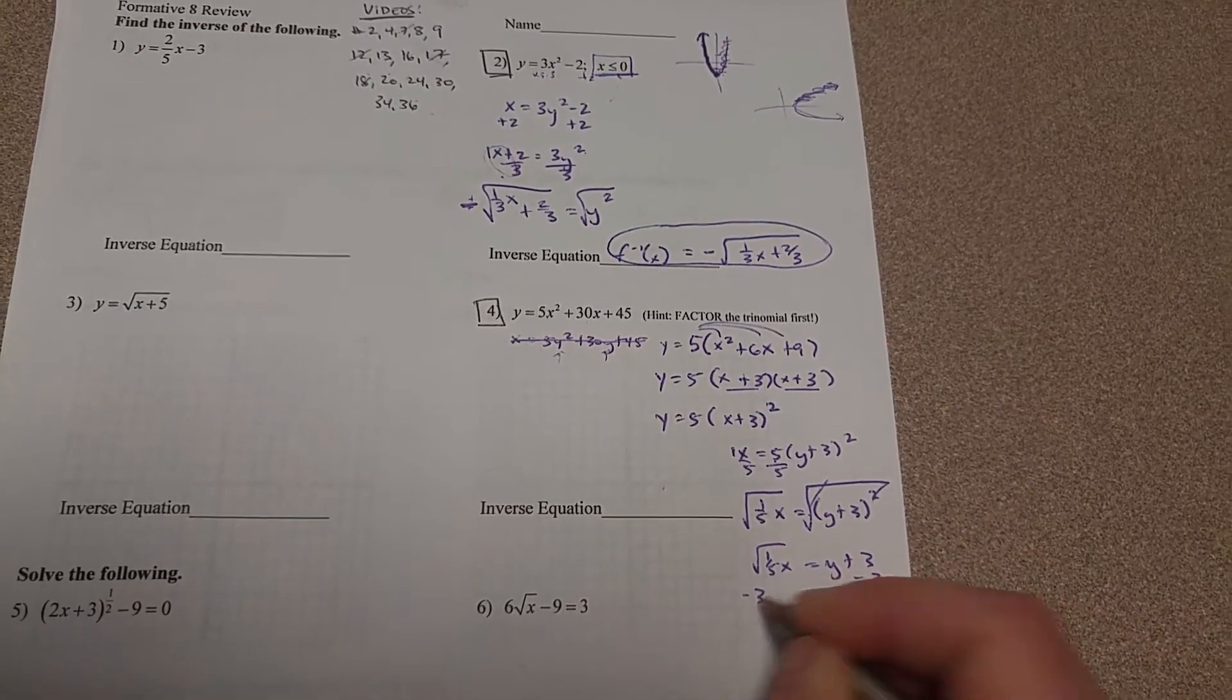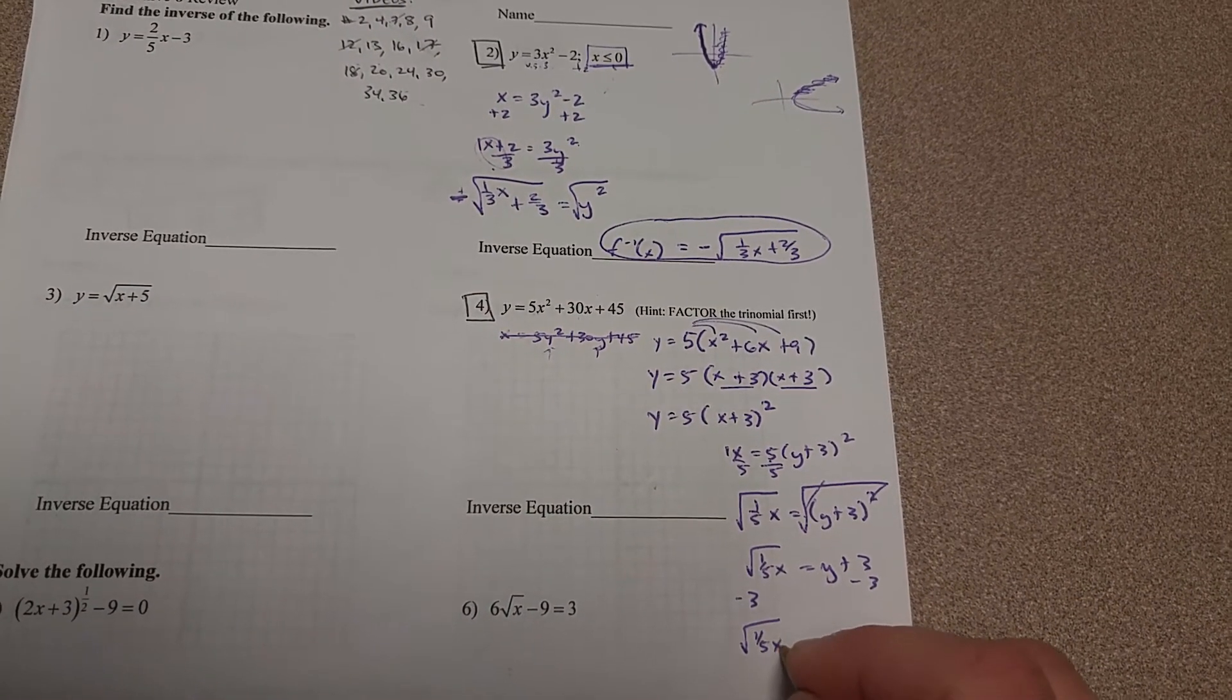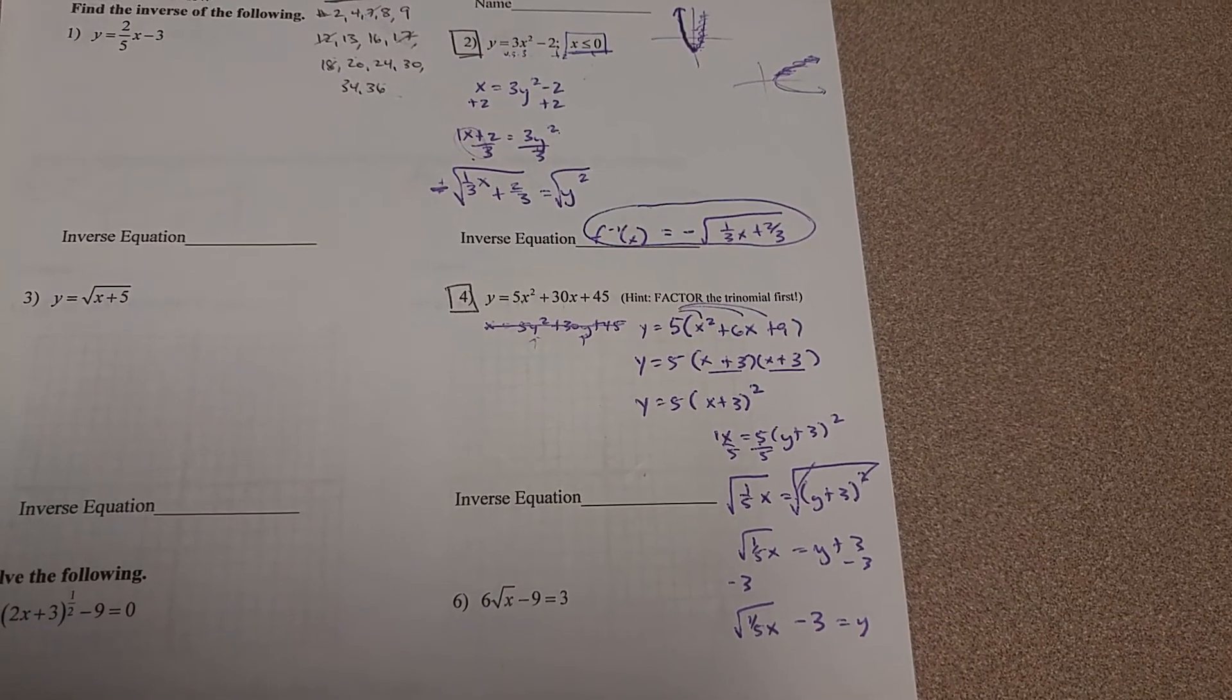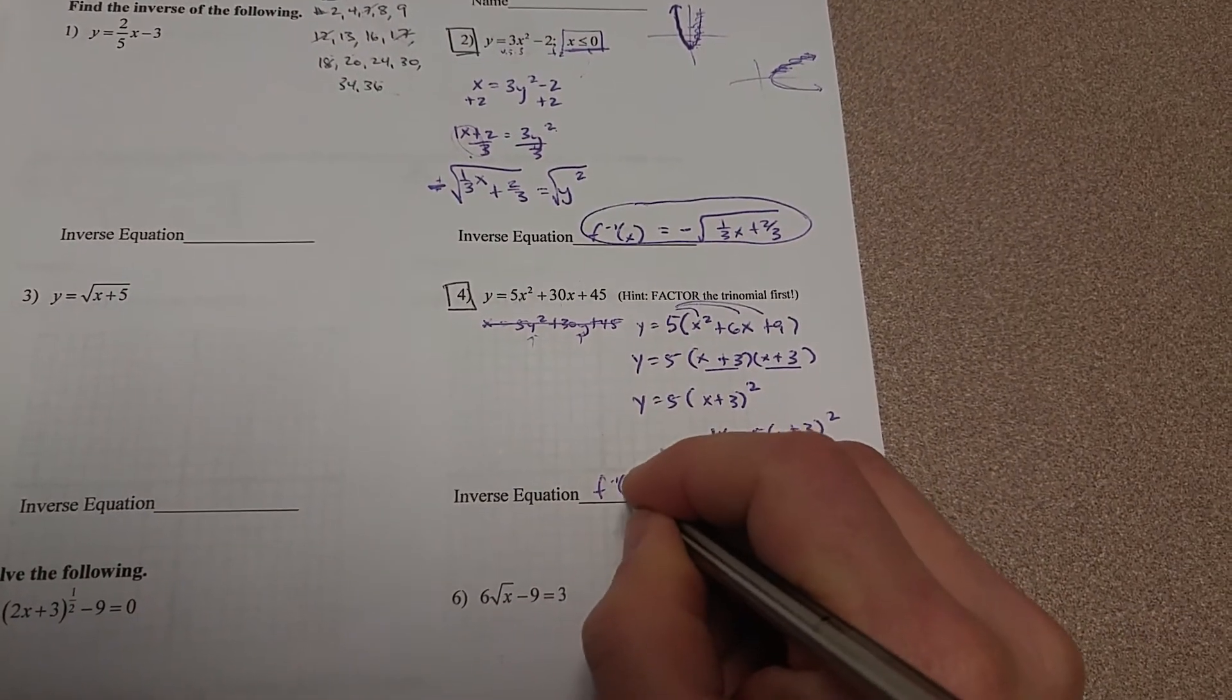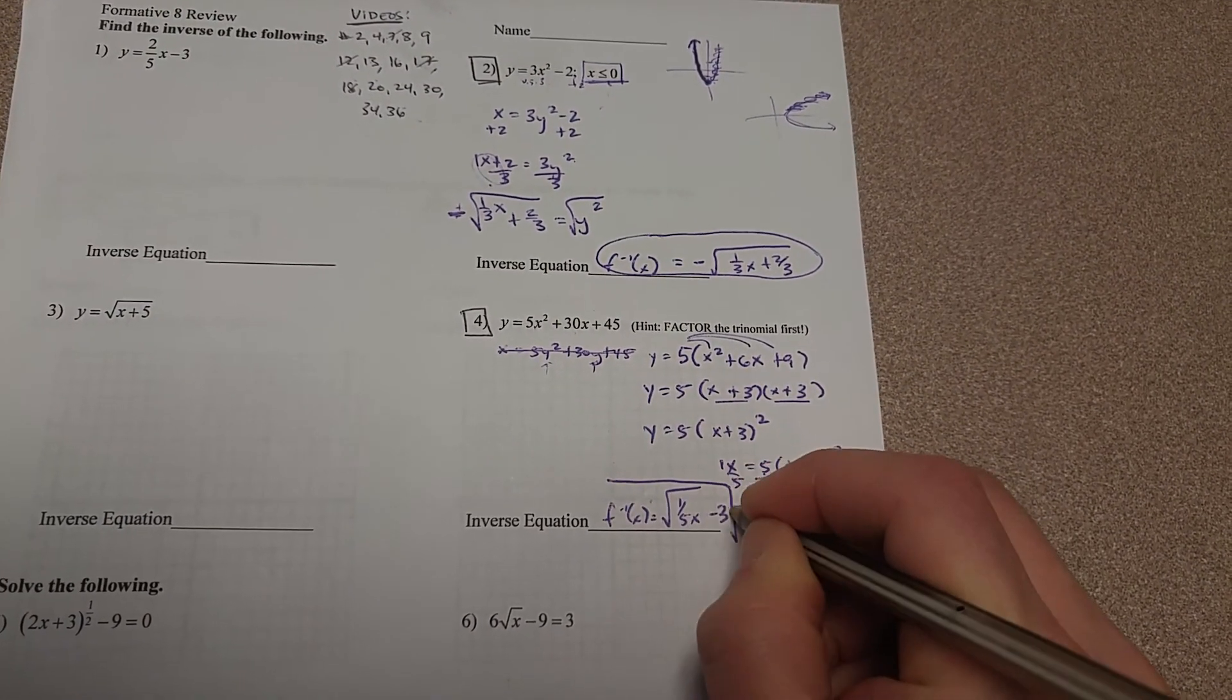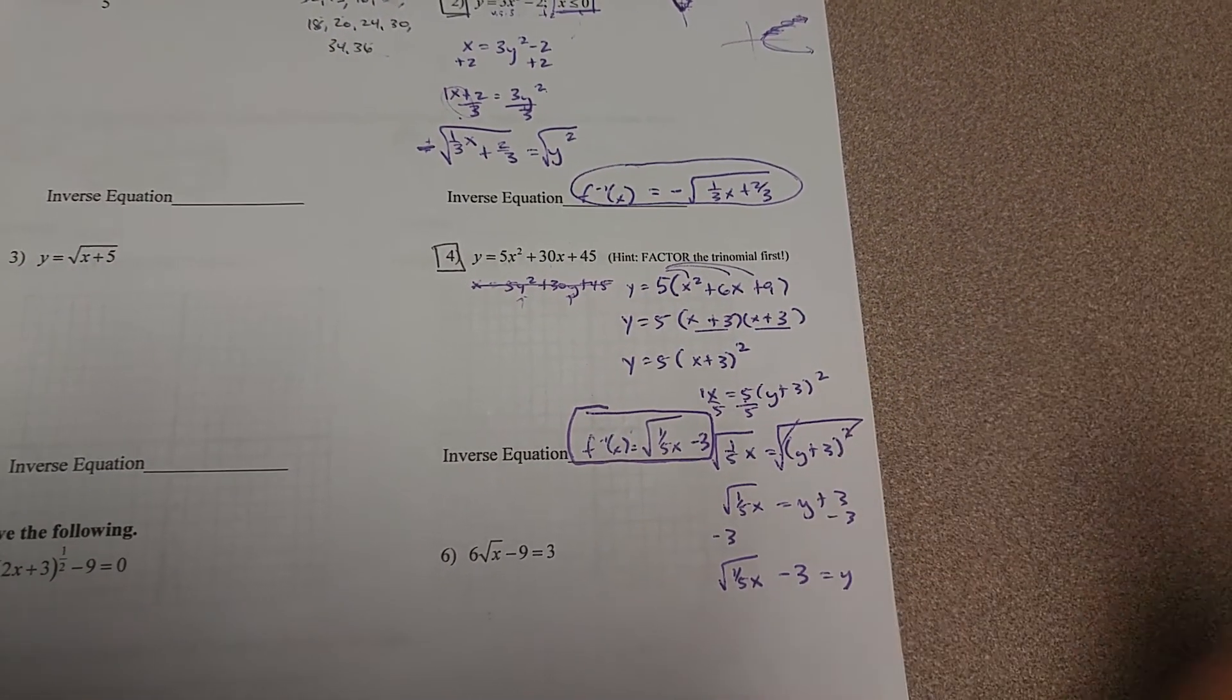So the only thing I need to do here is subtract 3. So square root of 1 over 5x minus 3 equals y. Just make sure that your minus 3 is not underneath that radical. It should be on the outside of it. So my inverse equation is f inverse of x equals square root of 1 over 5x minus 3. Again, it's not pretty, but a lot of times inverses aren't.